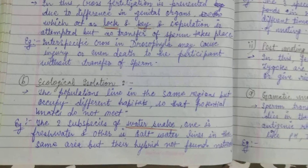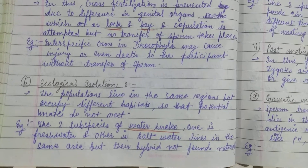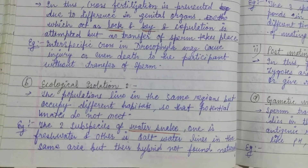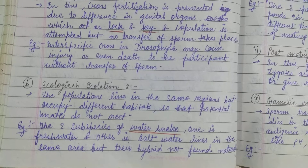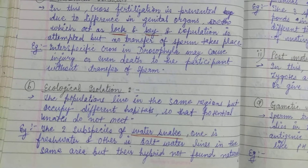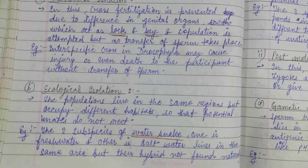In ecological or habitat isolation, there are two subspecies of water snakes — one is freshwater and another is saltwater — living in the same area, but their habitats are not shared naturally, so they do not interbreed.